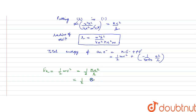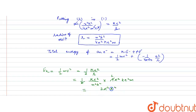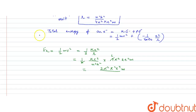Substituting r = n²h²/(4π²ke²m) into Ek = ½ke²/r: Ek = ½ × ke² × (4π²ke²m/n²h²). The 4 is cancelled by 2, giving the kinetic energy as: Ek = 2π²k²e⁴m / n²h².